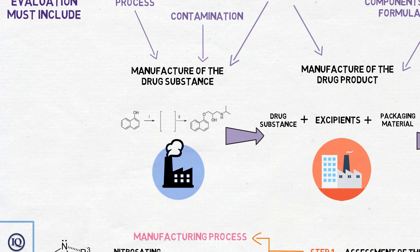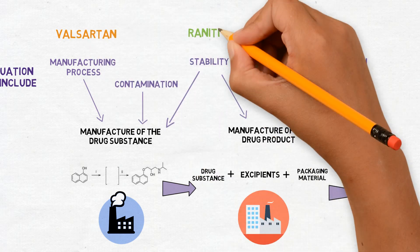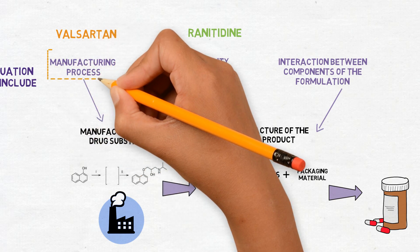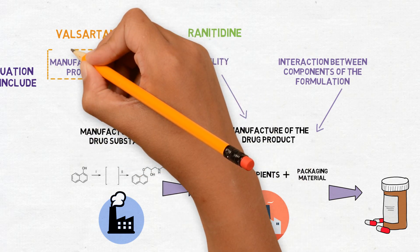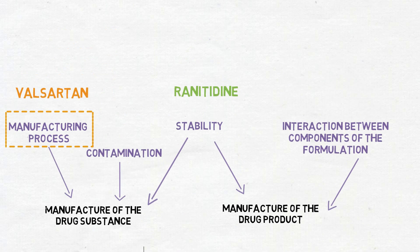Some of the cases which caused the recalls were Valsartan and Ranitidine. In the case of Valsartan, both precursors were used in the route of synthesis of the drug substance and their reaction led to the formation of the impurity.